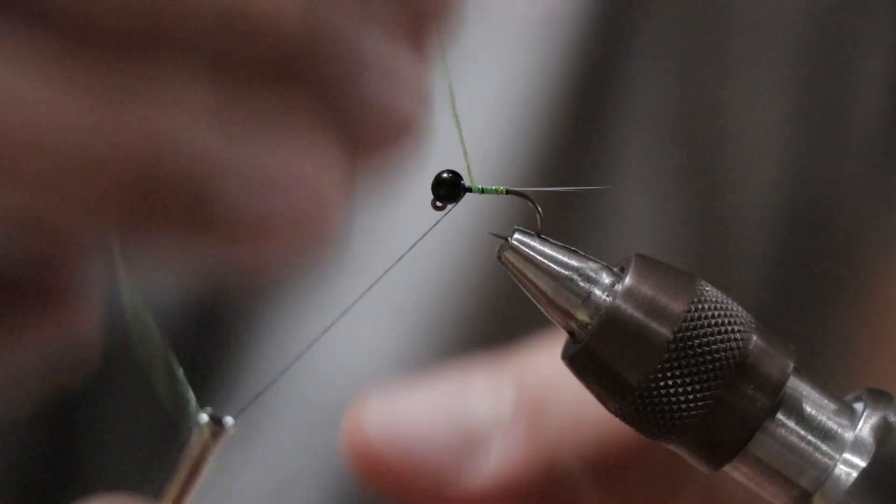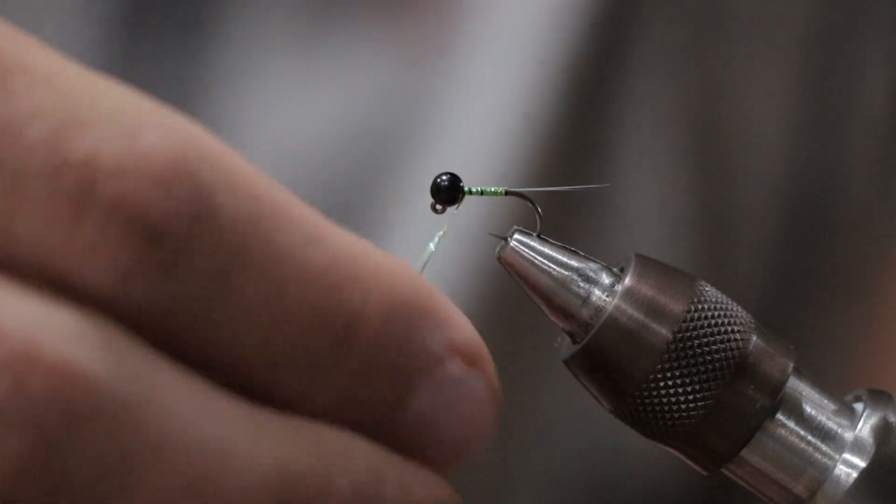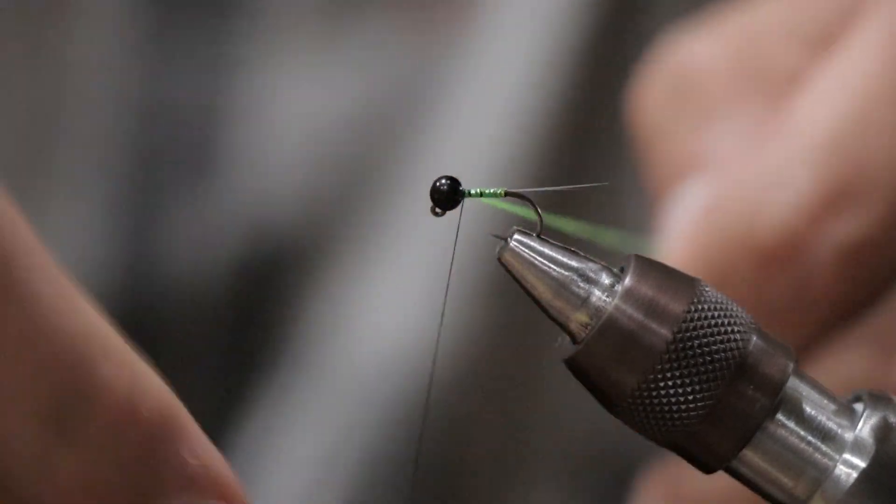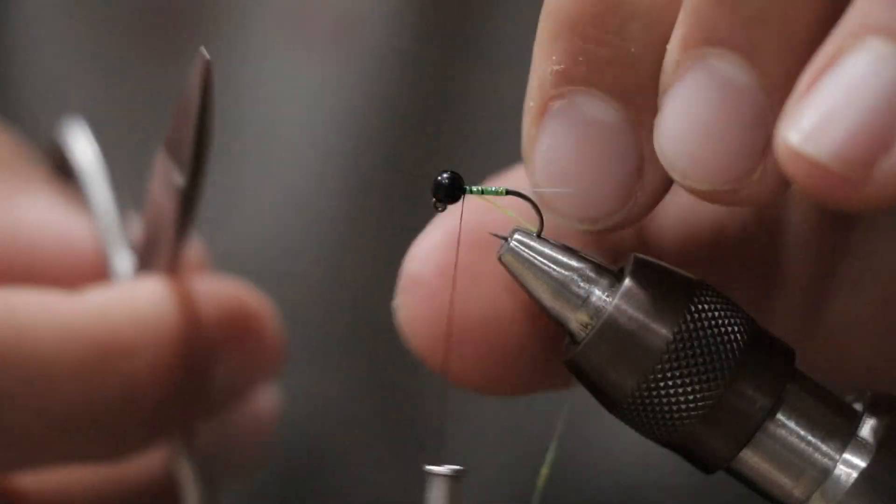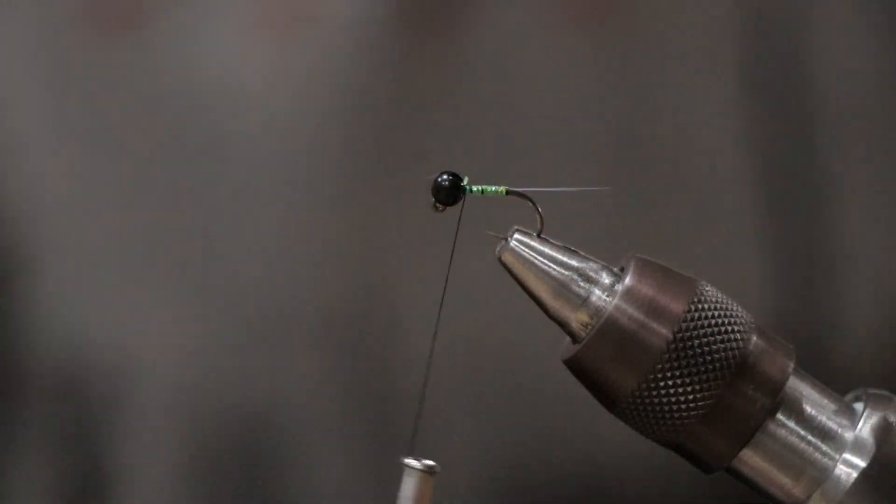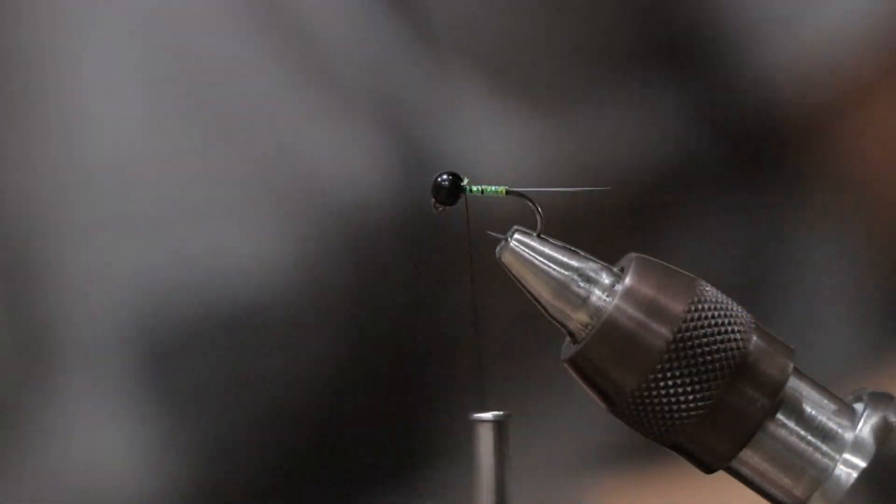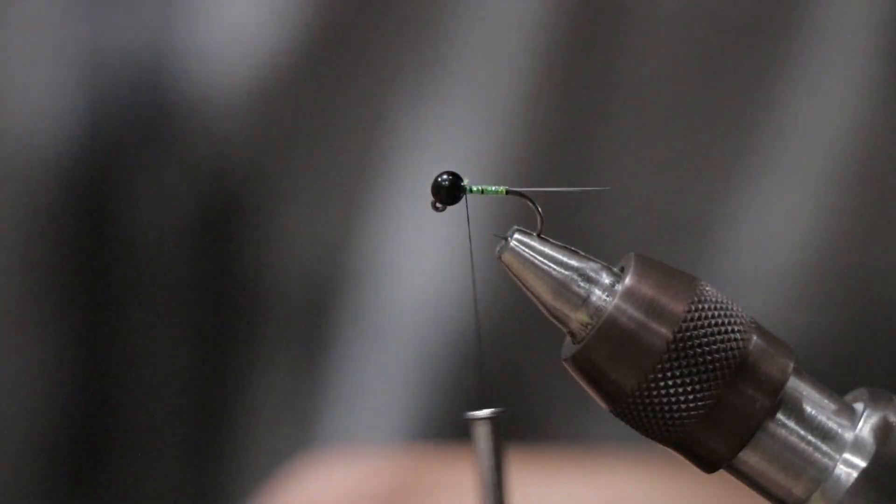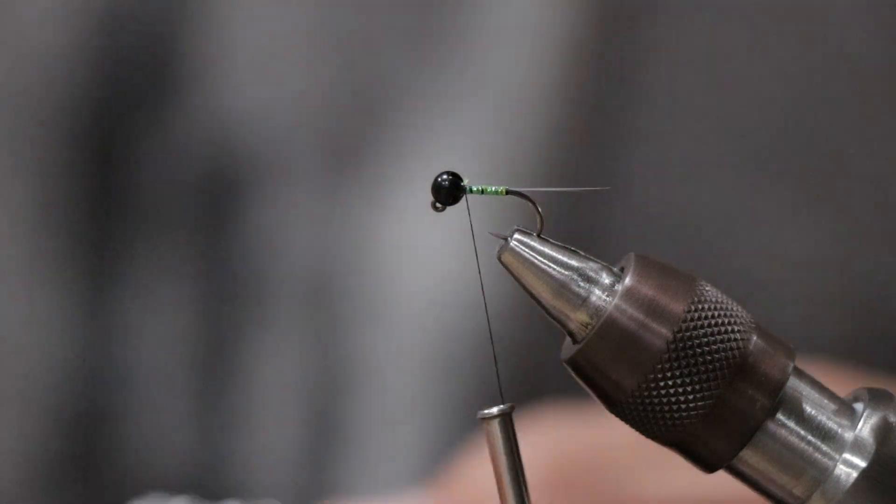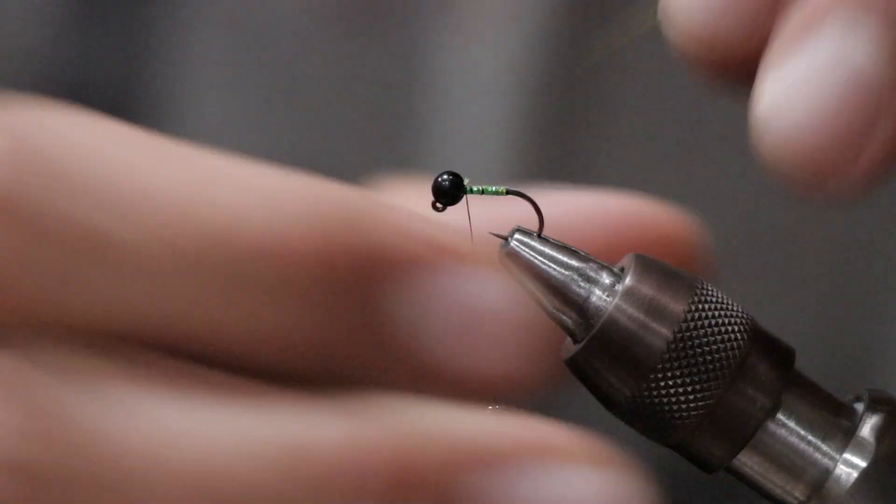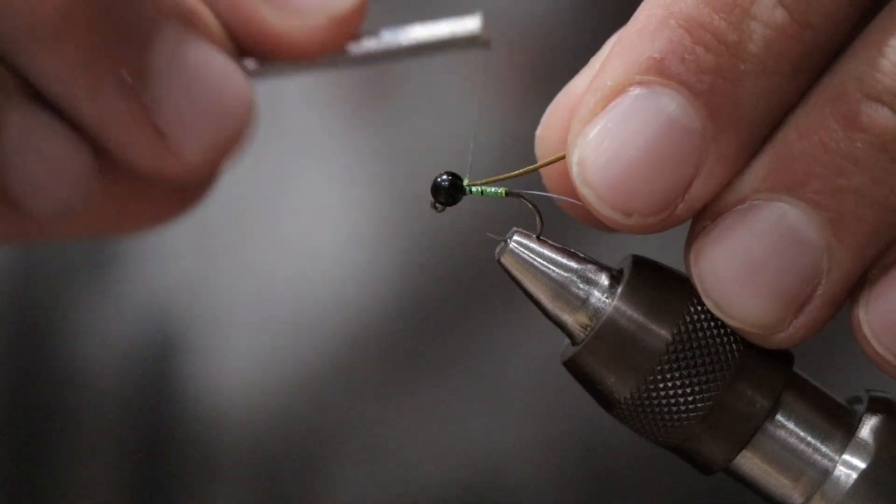So we're going to tie that in, wrap it all the way to the top, trim off that excess just like so, and then we're going to get our quills for the body. For the quills I'm just using some hand stripped golden olive quills for this.